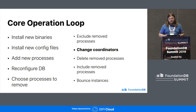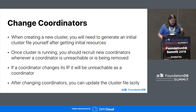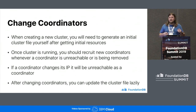In between that flow is where you'll probably need to change coordinators. For instance, if you're replacing a bad host and that host has a coordinator on it, you'll need to remove it from the coordinator list by selecting a new set. You'll probably want to do that during the exclusion phase, because that way the database also has knowledge about the fact that this is an undesired coordinator. When starting a new cluster, you need to generate an initial cluster file from scratch, and then recruit new coordinators by running a coordinator change command whenever a coordinator is unreachable or when it's being removed. Another thing to note is that if a coordinator changes its IP, it's going to be unreachable as a coordinator — no other part of FDB has this constraint.